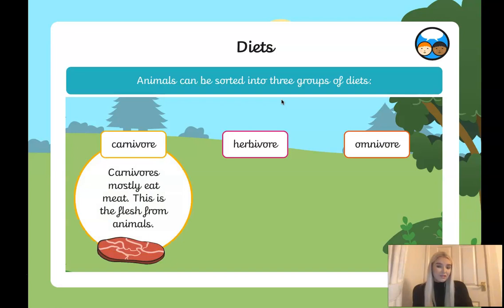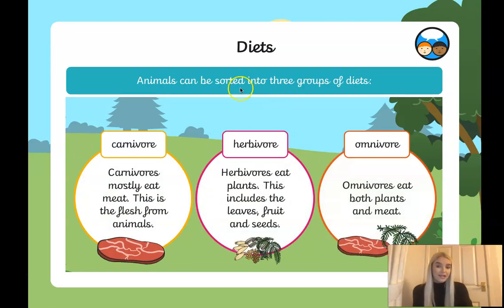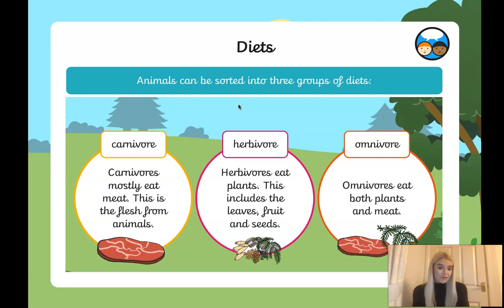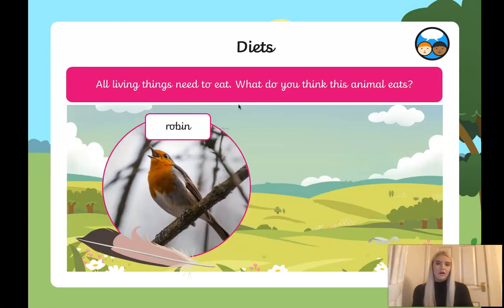So we have sorted them into three groups: carnivores mostly eat meat, which comes from the flesh of animals' bodies; herbivores eat plants, including leaves, fruit, and seeds; and omnivores eat both plants and meat. Hopefully that was just a refresh, but now we all remember what they are.